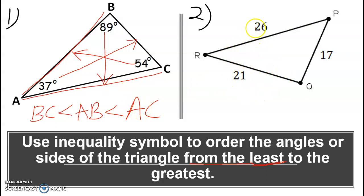How about this one? We are given the sides. Now we have to get the angle from least to greatest. Which side is the smallest? 21, 26, 17. 17 is the smallest. So if 17 is the smallest side, the angle opposite it should be angle R. So angle R is the smallest.